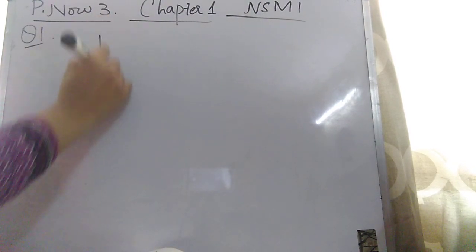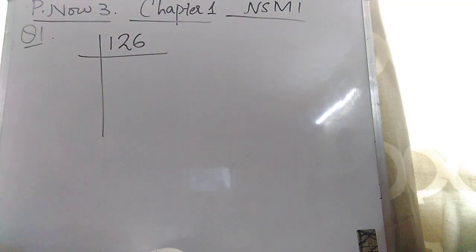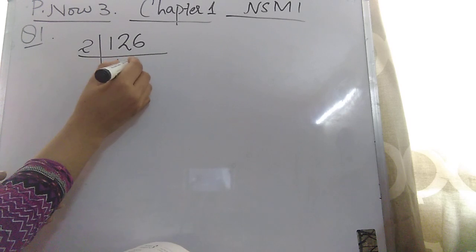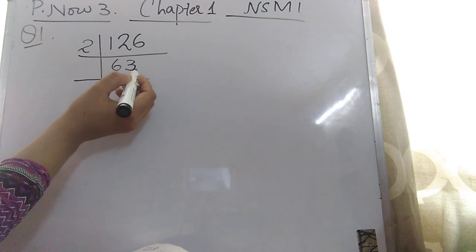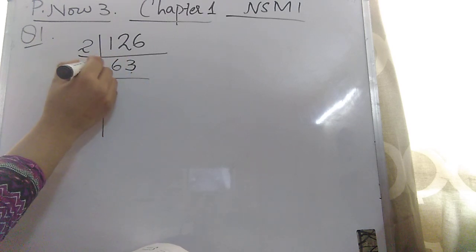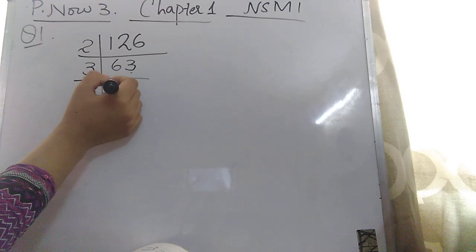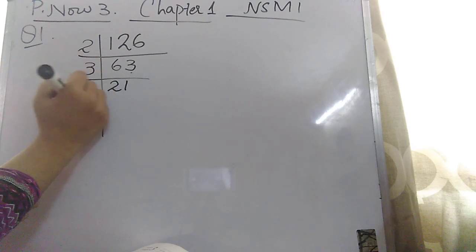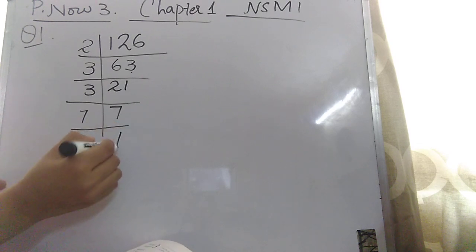We have to find the prime factors of 126. Start with 2: 2 × 63 gives 126, and then 2 × 3 = 6. The last number is odd, so it is not divisible by 2. Now let's move to 3: 3 × 21 = 63, and 3 × 7 = 21. Check whether it is divisible by 3 again — yes it is. So go on 3: 3 × 7 = 21. Then 7 goes into itself: 7 × 1 = 7.